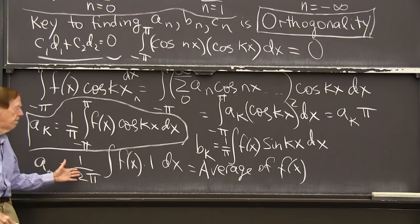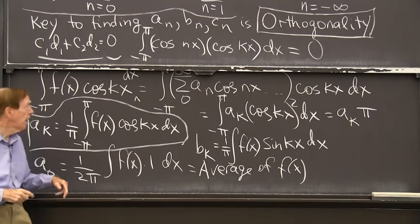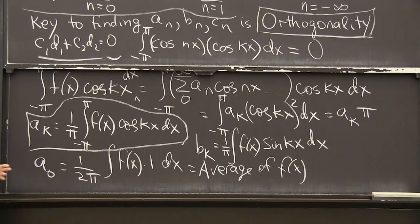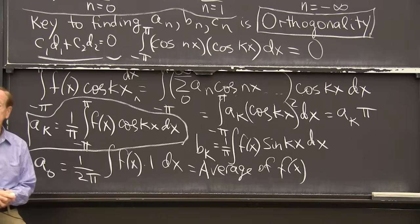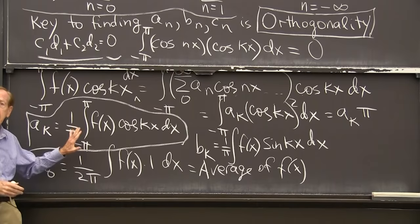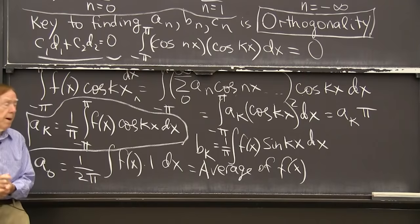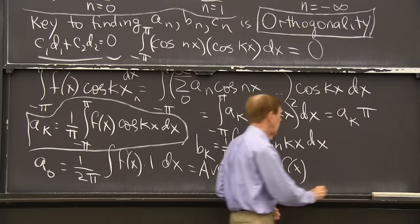That has a simple meaning. That's the average of f(x). Right. OK. So the basis function was just 1 when k was 0. And I get the integral of the function times 1 divided by 2 pi. Could we just do an example? So I want to take a function. And in this video, why don't I take an easy but very important function, the delta function.